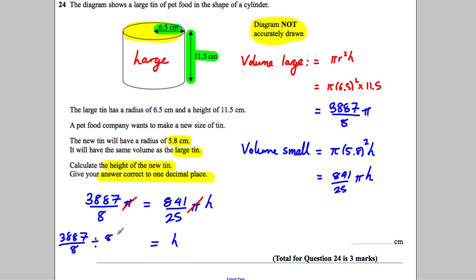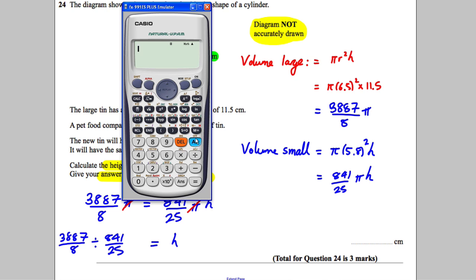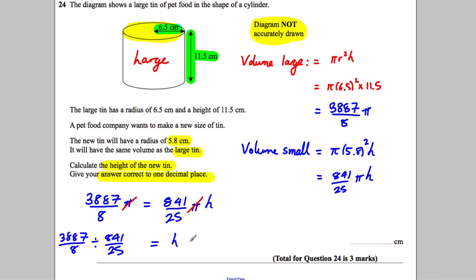Get the calculator out. All we've got to do is 3887 over 8 divided by 841 over 25. We get 14.44.